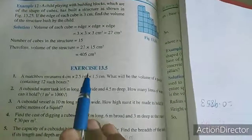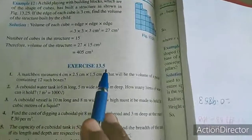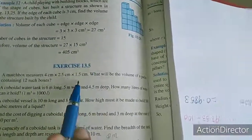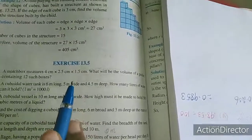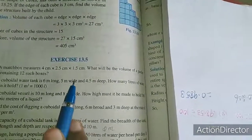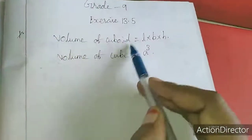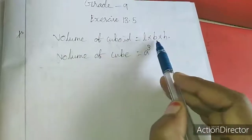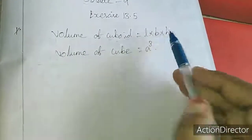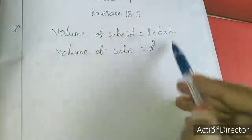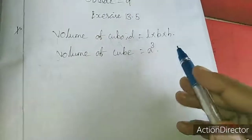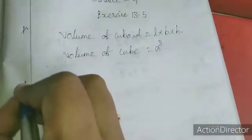Hi dears, now new exercise that is 13.5. In this exercise we are going to study about volume of cuboid and cube. The formula of volume of cuboid is L into B into H, volume of cube is A cube. These two formulas only in this exercise we are going to use. Now we will move to the first sum.